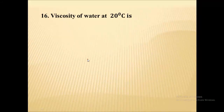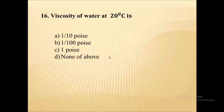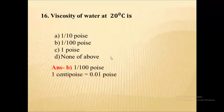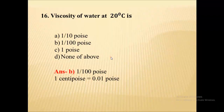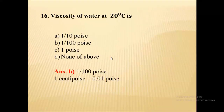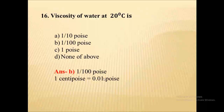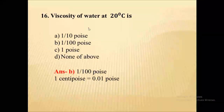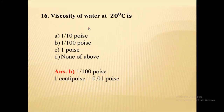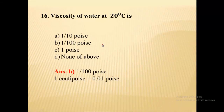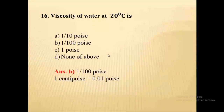The viscosity of water at 20 degrees Celsius is 1 centipoise, and 1 centipoise equals 0.01 poise, which can be written as 1/100 poise. Remember: viscosity of water at 20 degrees Celsius is 1/100 poise or 1 centipoise.